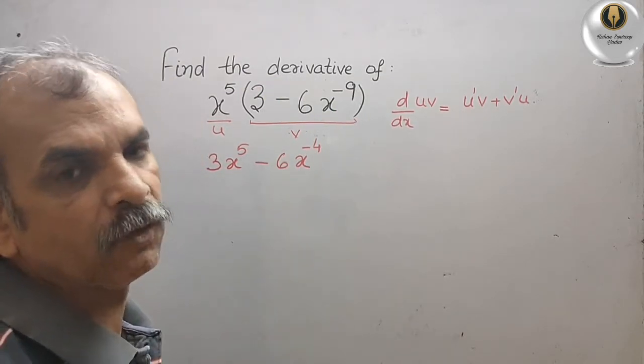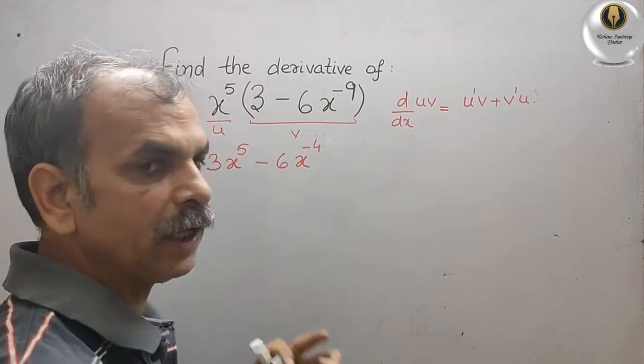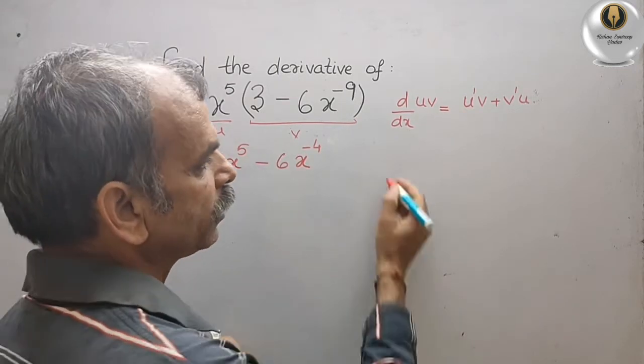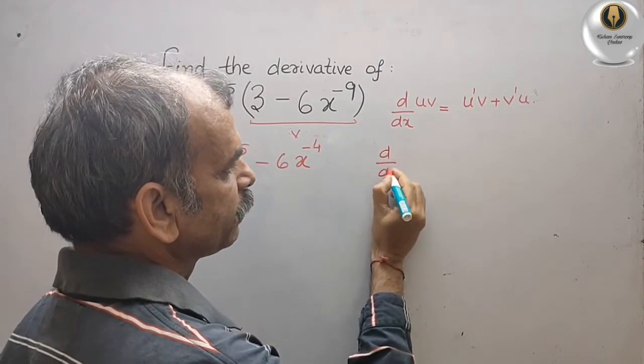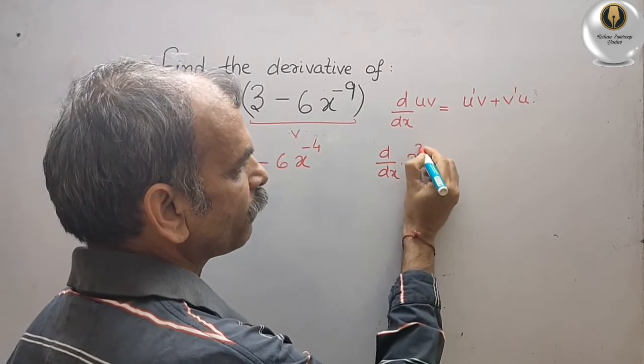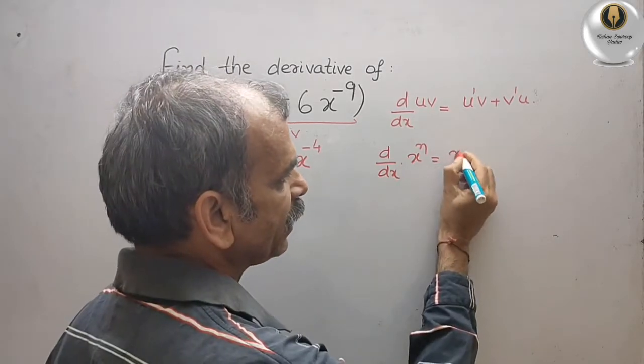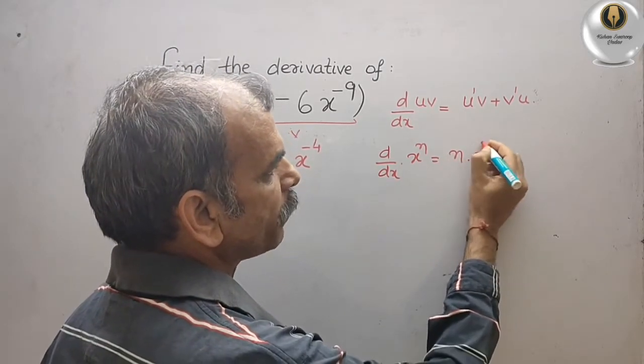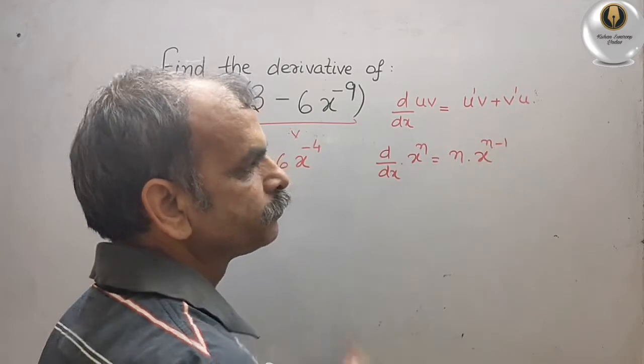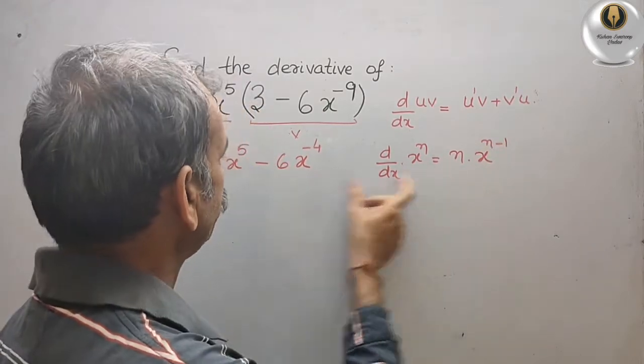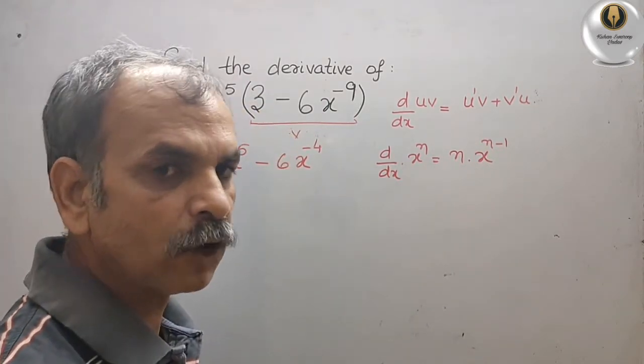Now solve this. We know our theorem. If they have asked you d by dx of x to the power of n, that is equal to n into x to the power of n minus 1. This theorem we will write here.